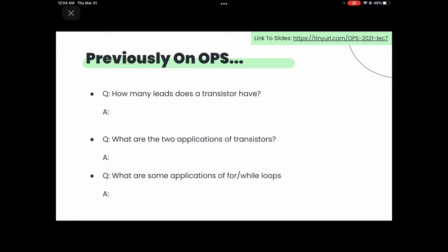Last lecture we were talking about transistors. Does anyone remember how many leads a transistor has? Three — awesome. And what are the two applications of transistors? One of the applications is amplification: you can take a really small amount of current, pass it through a transistor, and you'll have a really large current outside.